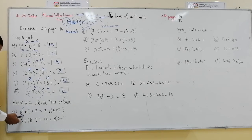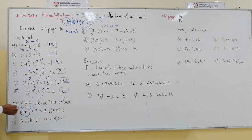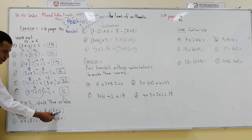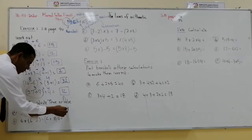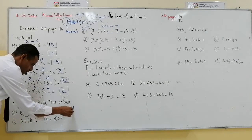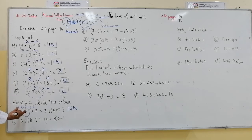I will calculate the brackets first: 3 plus 6 is 9, multiplied by 2 is 18. But on the right side, 6 multiplied by 2 is 12, plus 3 is 15... wait, that gives 11. So they are not equal — this statement is false, because we should calculate what is inside the brackets first, then multiply by 2.